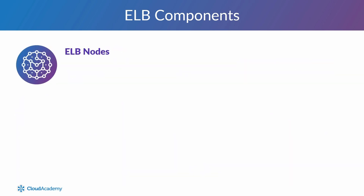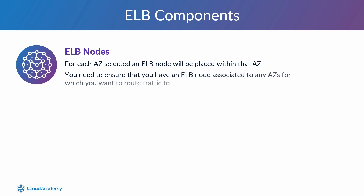ELB Nodes: during the creation process of your ELBs, you are required to define which availability zone you'd like your ELB to operate within, and for each availability zone selected, an ELB node will be placed within that availability zone. You need to ensure that you have an ELB node associated to any availability zones for which you want to route traffic to. Without the availability zone associated, the ELB will not be able to route traffic to any targets within that availability zone, even if they are defined within the target group, because the nodes are used by the ELB to distribute traffic to your target groups.